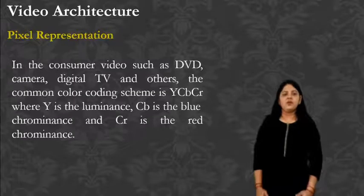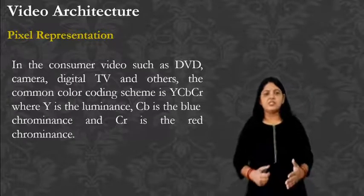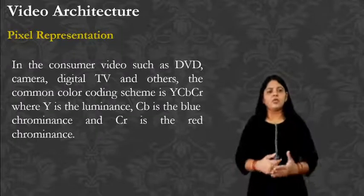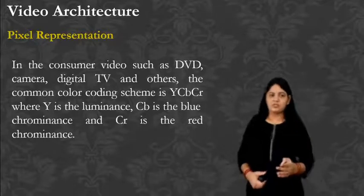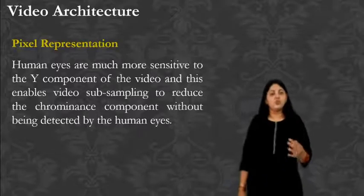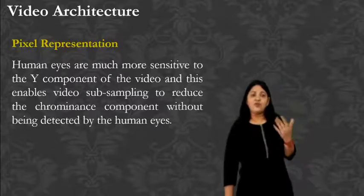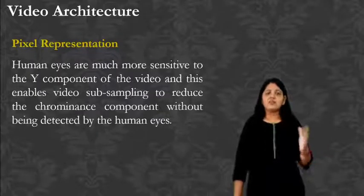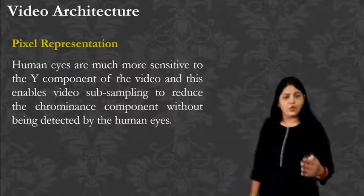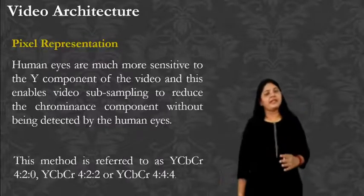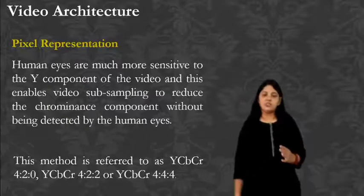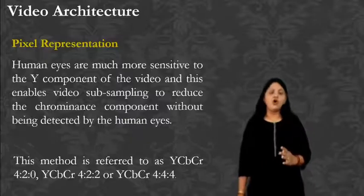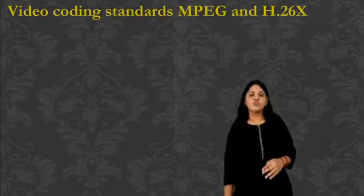In consumer video — such as DVD, camera, digital TV and others — the common color coding scheme is YCbCr, where Y is luminance, Cb is blue chrominance, and Cr is red chrominance. The human eye is more sensitive to the Y component of video, which enables video subsampling to reduce the chrominance component without being detected by the human eye. This method is referred to as YCbCr 4:2:0, YCbCr 4:2:2, or YCbCr 4:4:4.